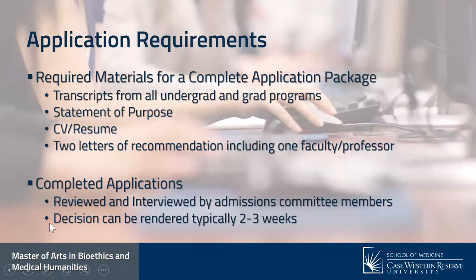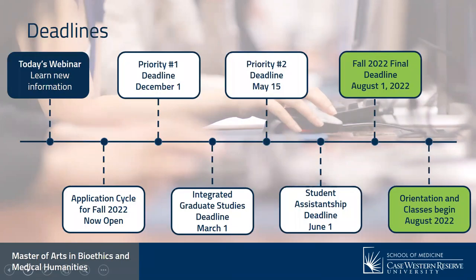To apply to the program, we require transcripts from all undergrad and graduate programs, a statement of purpose about your interest in the master's program in bioethics and medical humanities and how it fits into your career path, a resume or CV, and two letters of recommendation including one from a faculty member or professor. Once we have a completed application, our admissions committee will review and interview you, and a decision can typically be rendered in two to three weeks. The final deadline for joining this fall is August 1st.